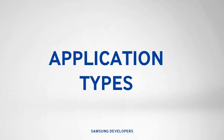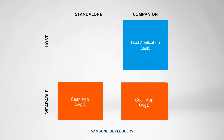Gear applications currently have two types: the standalone and companion types. The standalone, as the name suggests, is a lone Tizen application capable of running and operating independently on the gear device. Companion type, on the other hand, is made up of a host-side application developed using Android APIs and a gear application developed using Tizen APIs. Companion gear type applications enable data communication and interaction between the host and the wearable. To connect both parts of the app, Samsung Accessory SDK is utilized.